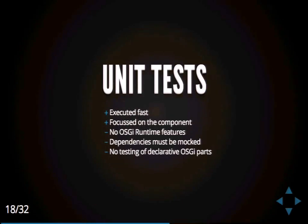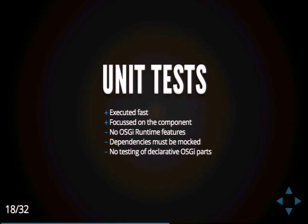We can write a simple unit test as shown before. Unit tests are executed very fast and are focused on the component, but they have disadvantages. On the one hand, you don't have OSGI runtime features — maybe you need a bundle context, a service tracker, and other things. You could mock all those things, but you don't want to. If you want to do a JUnit test you must mock all of them. Another thing is, if you're writing OSGI products, you have declarative parts: the manifest MF, declarative services — and testing all those things is not possible with unit tests.